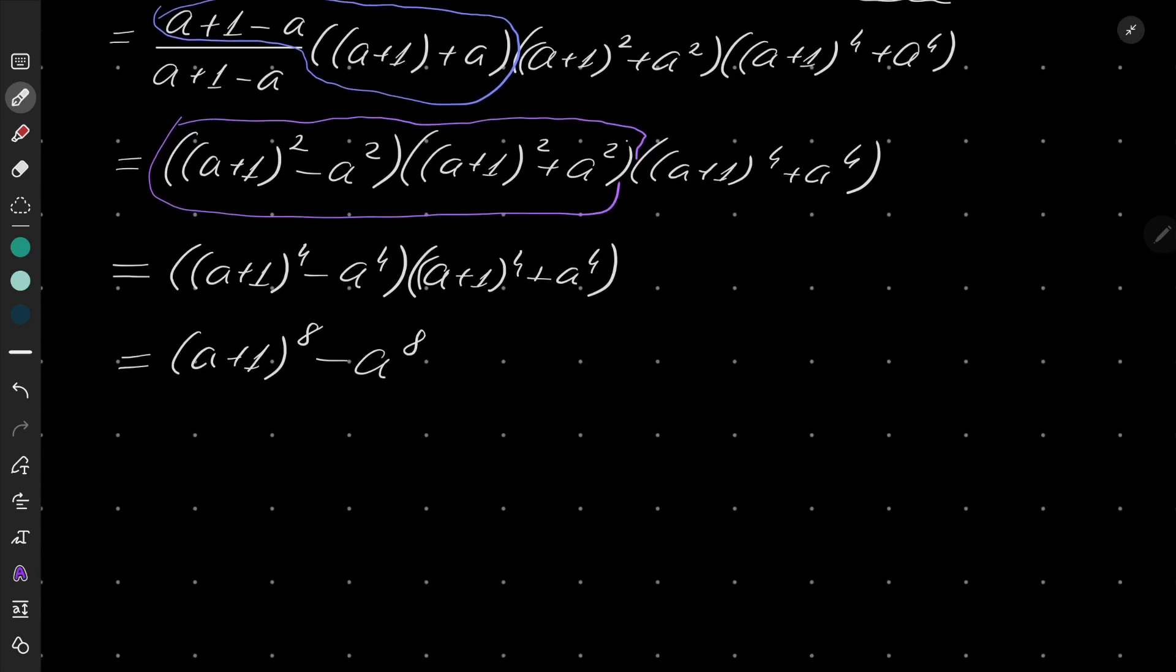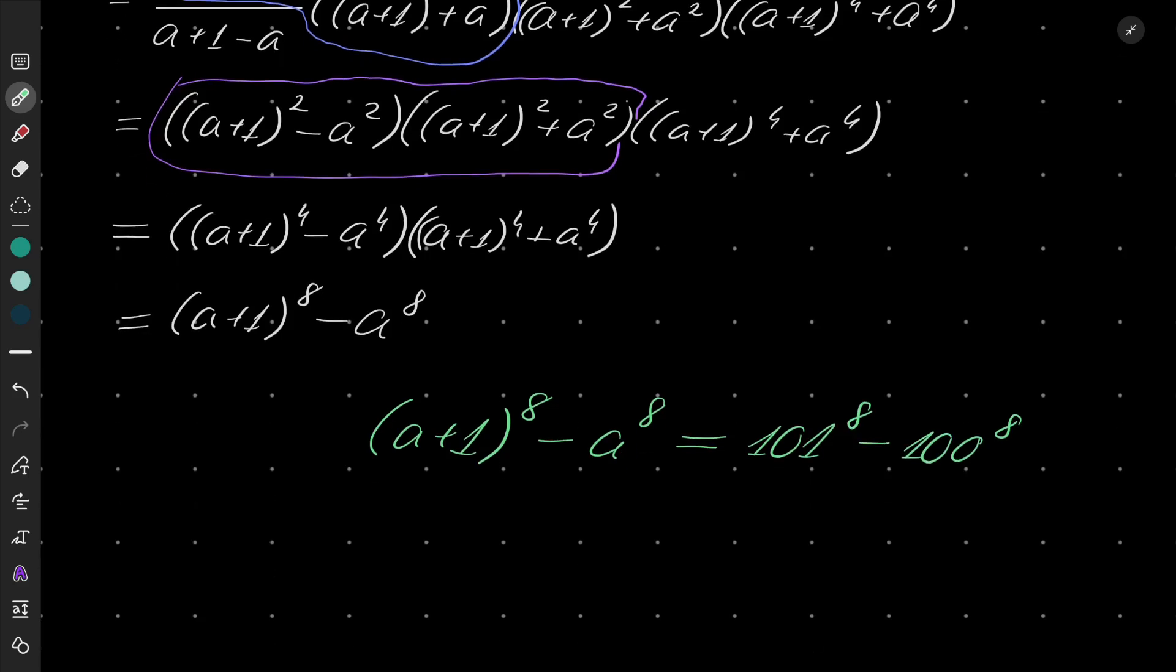And one last time it will be (a+1)⁸ - a⁸. Okay, so our equation has the following form: (a+1)⁸ - a⁸ = 101⁸ - 100⁸. And now we see one obvious solution. Namely, a = 100 is a solution.